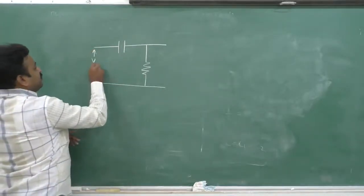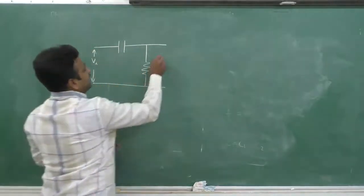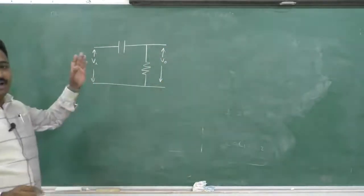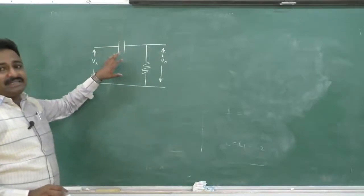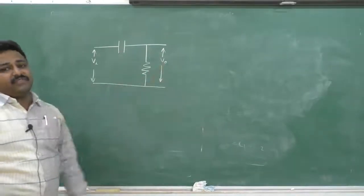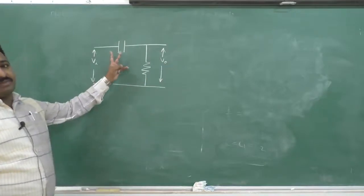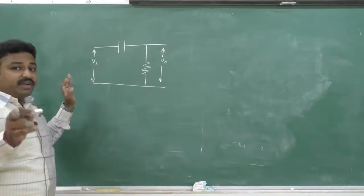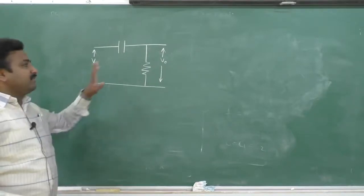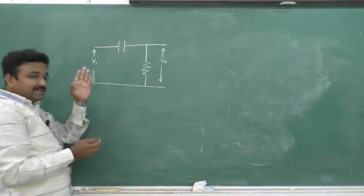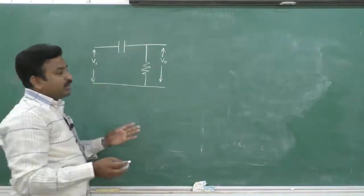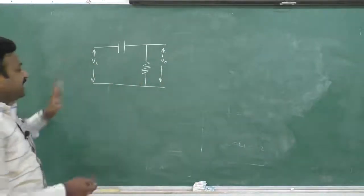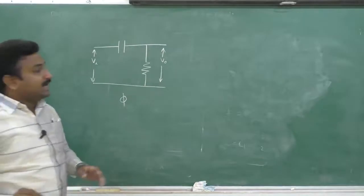Here we apply the input voltage Vi and measure the output voltage V0. We call this an RC high-pass filter because it passes only high-frequency signals — low-frequency signals are blocked by the capacitor. An important property of this circuit is that the output voltage leads the input voltage by an angle phi.